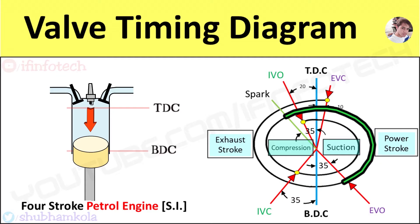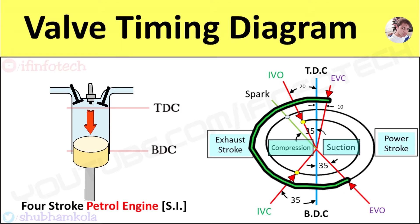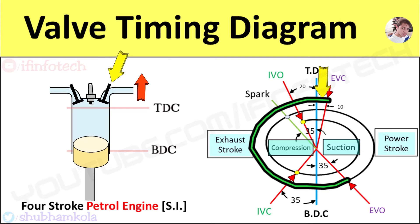This high pressure and high temperature burned gases force the piston to perform the power stroke, also known as the expansion or working stroke. The engine produces mechanical work during the power stroke. Near the end of the power stroke, the exhaust valve opens at 35 degrees before BDC position of the piston, suddenly bringing cylinder pressure to atmospheric pressure. Exhaust gases exit the cylinder at constant pressure, and the exhaust valve closes at 10 degrees after TDC.